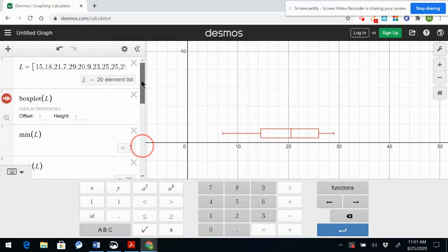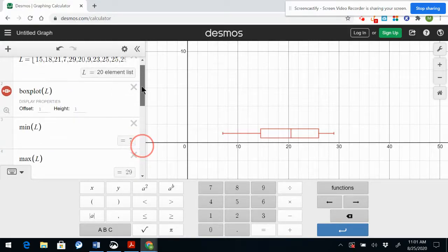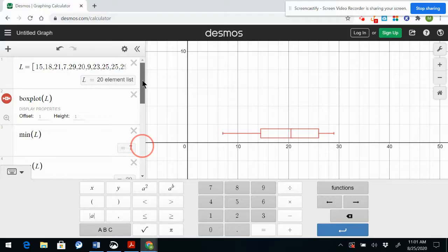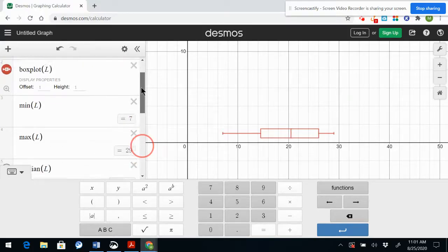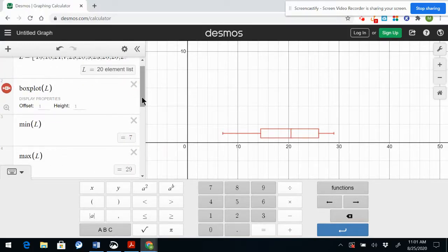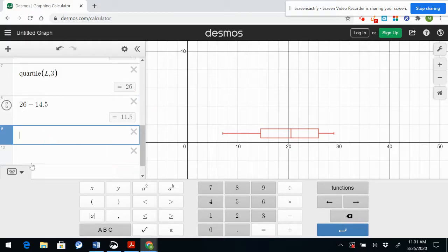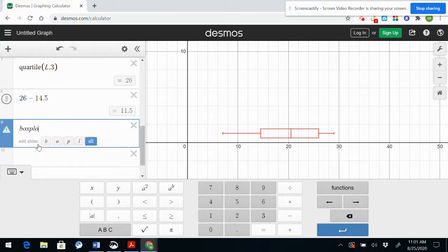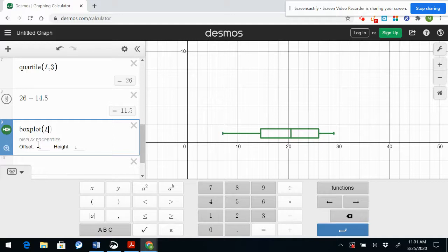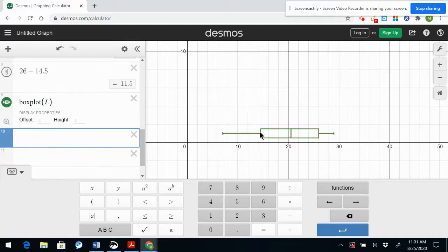So that is how you use Desmos to very quickly and easily generate a box plot as well as calculate the values. If you want to just type them in you can also just type in the values. You do not have to go through the keypad. You can type in box plot L and it will generate the box plot just typing it in. So I hope this video helps.